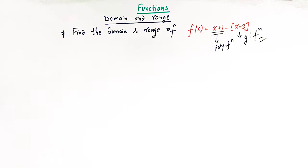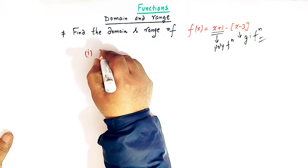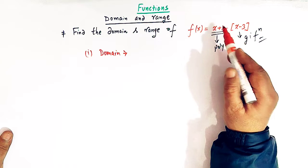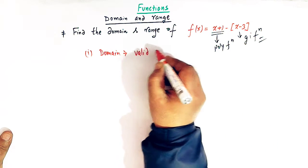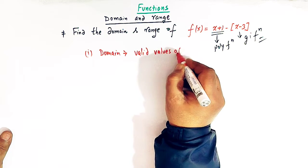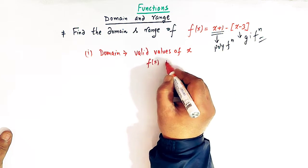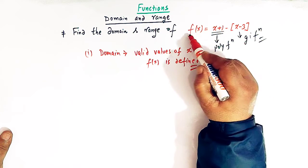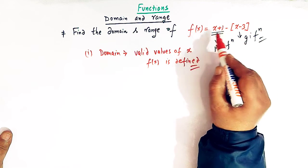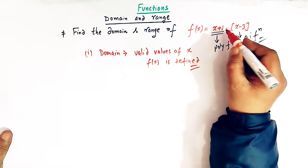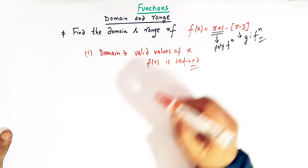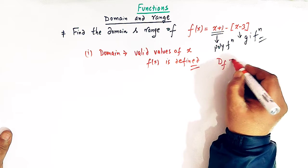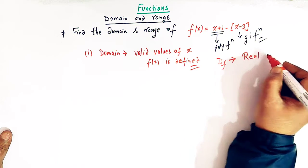Let us first find out the domain of this function. By domain of a function, we take all the valid values of x for which the function f(x) is defined. Here we see that this function f(x) has the domain as the set of real numbers, because for all values of x this function is defined. So the domain of this function is the set of all real numbers.